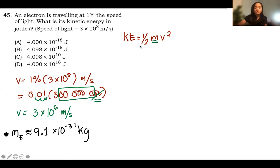So let's compute kinetic energy equals one-half of the mass. So that's 9—let's just use 9 times 10 to the negative 31 kilograms times 3 times 10 to the 6 meters per second squared.